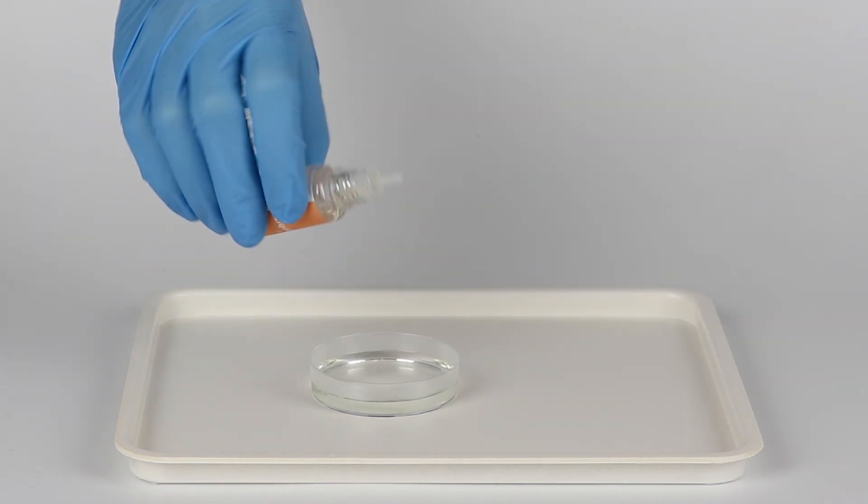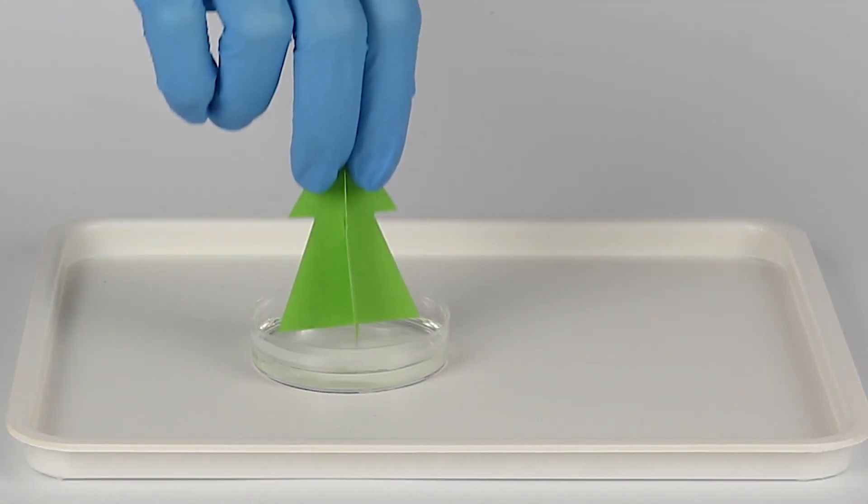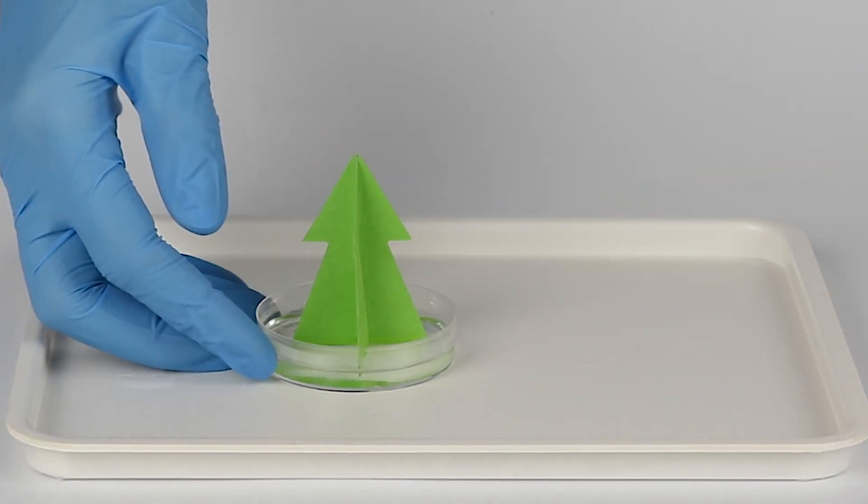Being a surface active agent, the soap reduces the surface tension of the solution and makes it evenly spread across the bottom of the petri dish. Assemble the Christmas tree from the template and put it into the petri dish.